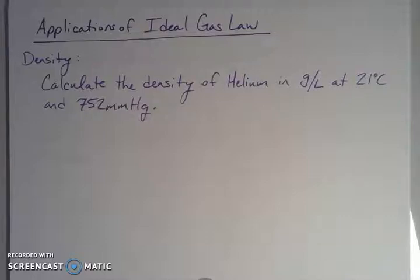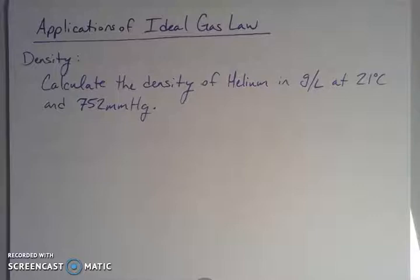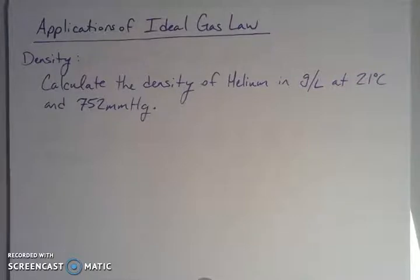Today I want to talk about some applications of PV equals nRT, the ideal gas law, because there's a lot of things you can do with it besides just solving PV=nRT all the time. You can use it to find things like the density of a gas. I want to do a couple examples of finding density of gases, which has a lot of utility for different technological applications. You can also rearrange PV=nRT to get various things depending on the information you're given, and I'm also going to apply stoichiometry to the ideal gas law.